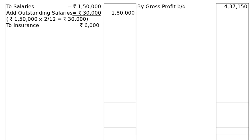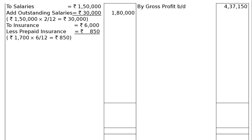Next one is to insurance Rs. 6,000. As per adjustment 6, insurance includes a premium of Rs. 1,700 for a policy expiring on 30th September 2016. To insurance, less prepaid insurance for 6 months: annual premium is Rs. 1,700; for 6 months it is 6 by 12, that is equal to Rs. 850. This is a prepayment. It will be deducted from insurance and shown under the head current assets in the asset side of the balance sheet. That is Rs. 5,150.